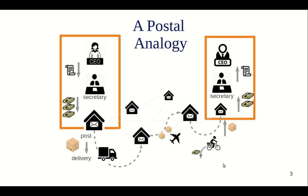The link layer is analogous to the delivery van or the flight and so on. Its job is to take the packet across a single link. For example, the postal office is not bothered with how the delivery van actually operates or how the driver does the delivery — that is the job of this delivery service. Similarly, the link layer's job is to deliver the packet across one link at a time, and there could be different types of links with different bandwidths and different speeds.